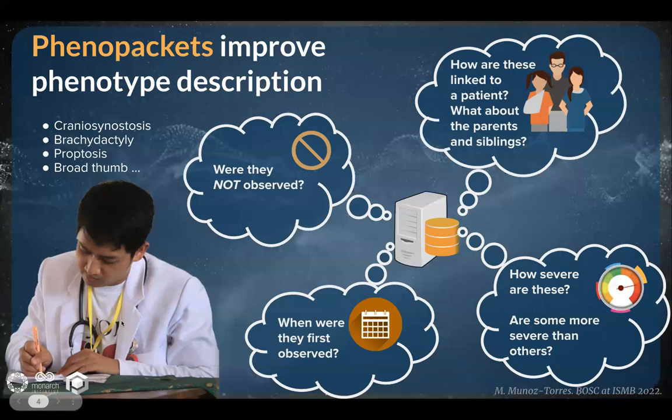To fill this gap, we created the Phenopacket Standard. It is an exchange format for phenotypes and environmental factors — a packet of phenotype data to be used anywhere and written by anyone. These packets are encoded using ontologies and can be used to relate a patient's phenotypic profile to model organisms, helping to improve diagnostics, mechanism discovery, and the integration with environmental health data.